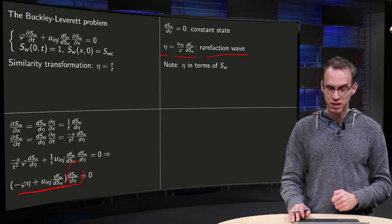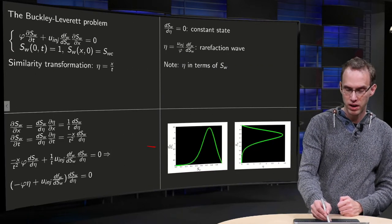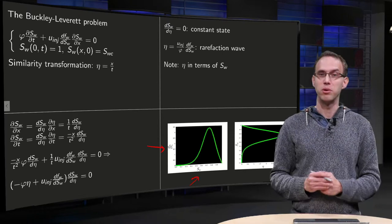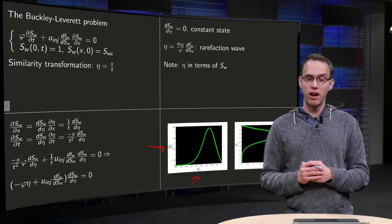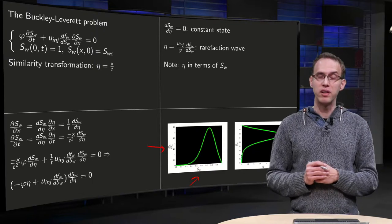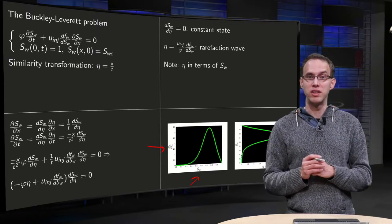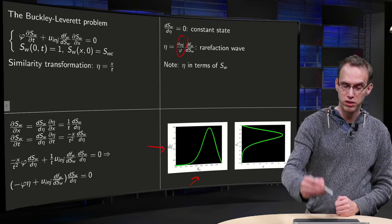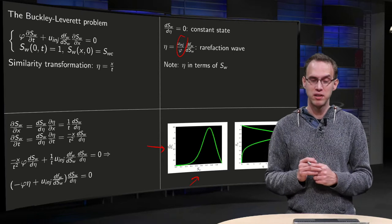Well, we can make that. If you plot, for example, dfw/dSw on the y-axis and Sw on the x-axis, we can find, by inverting this, our η in terms of Sw. Note that we took u injector over φ over here as 1 to simplify it a bit.